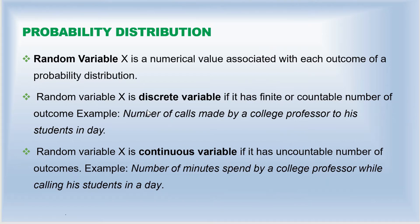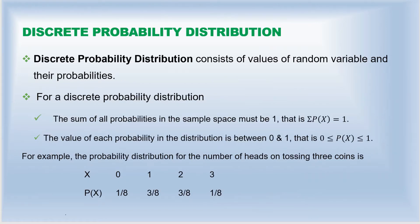In this chapter, our focus will be on the discrete random variable. When the variable is a discrete random variable, we talk about the discrete probability distribution. So let's see what a discrete probability distribution is.